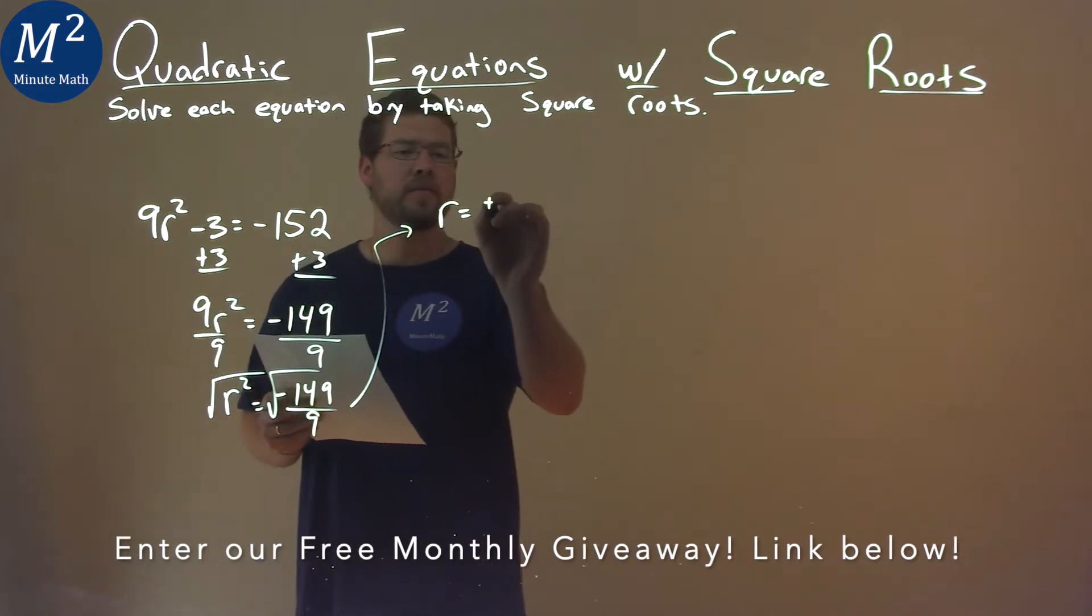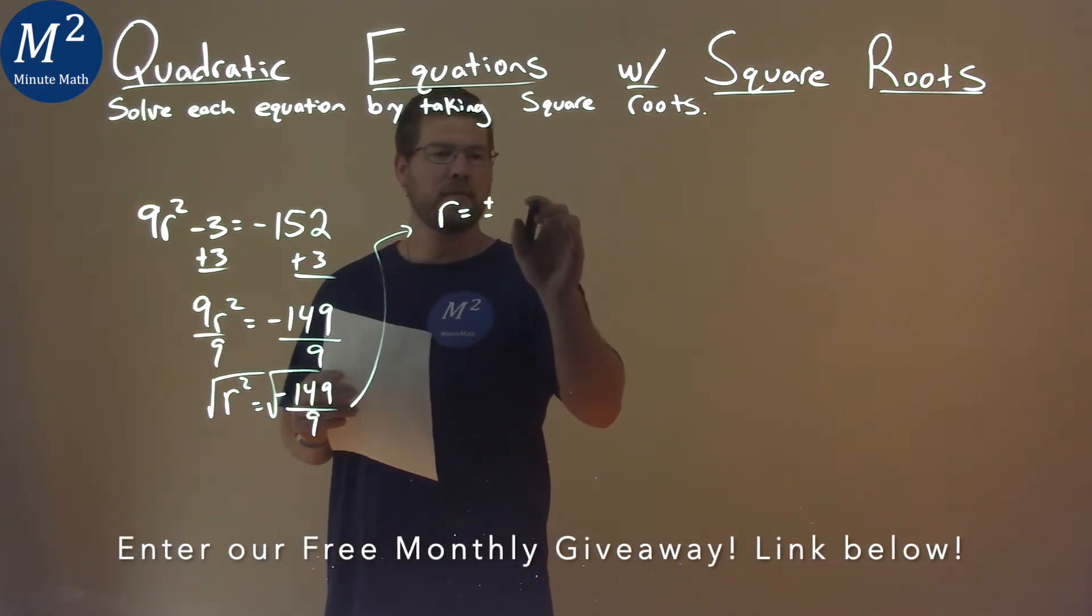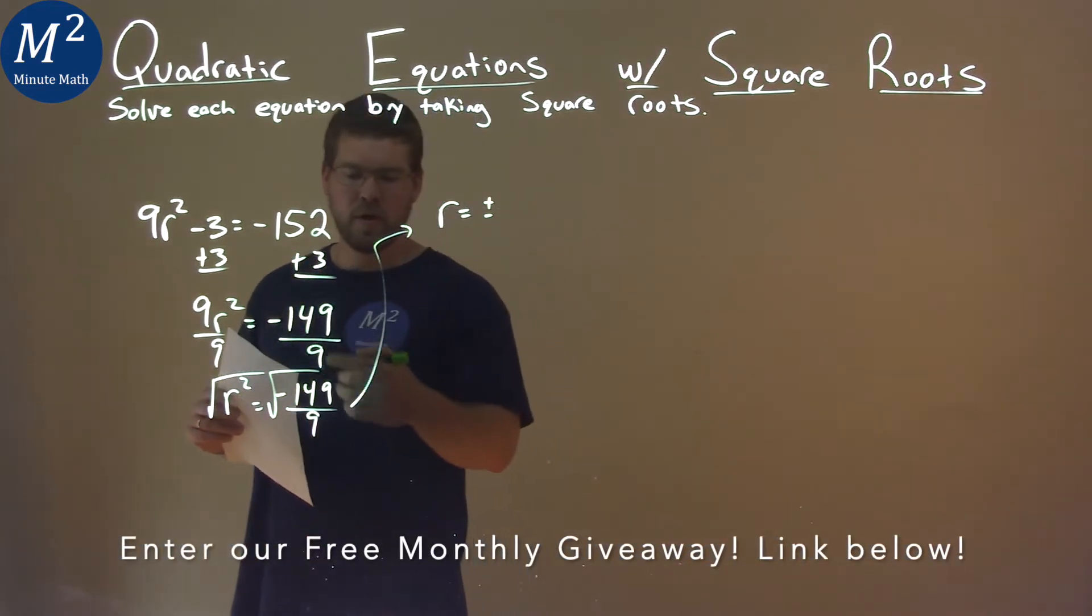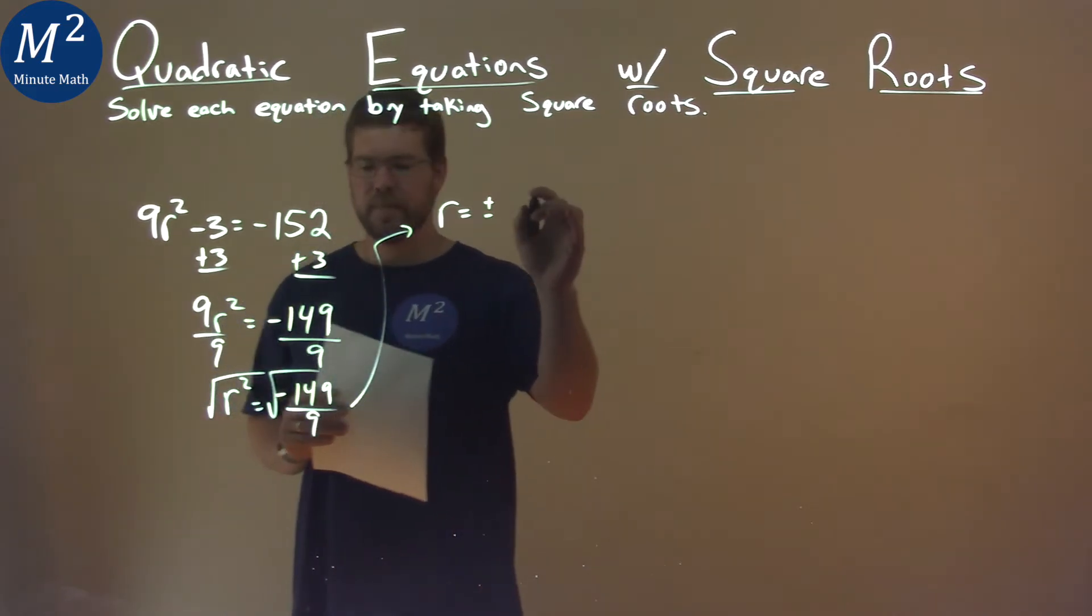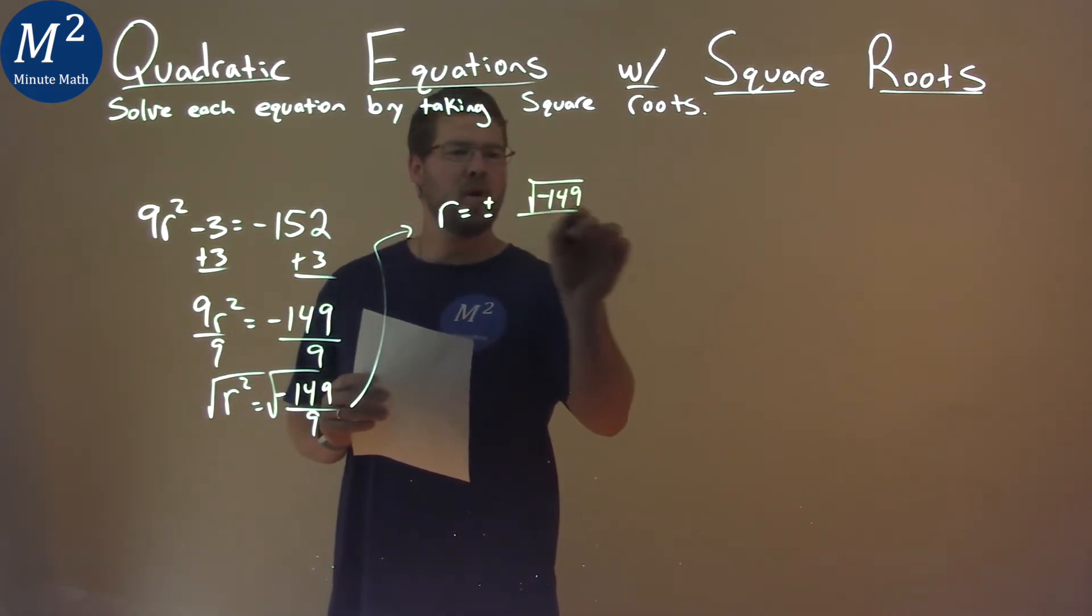We take a square root of both sides, we have to do a plus or minus, and the square root can go to the numerator and denominator individually. So, the square root of negative 149 over the square root of 9.